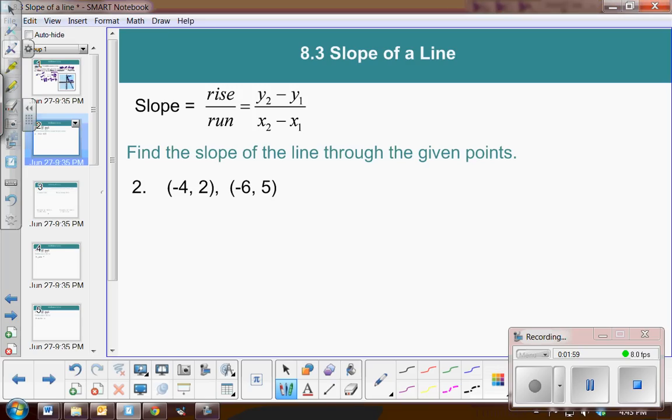Well, let's do one more example without the graph. So you're given two points and you need to calculate the slope. So according to the formula for slope, we're going to find the change in y. So 5 minus 2 compared to the change in x. Negative 6 take away a negative 4.